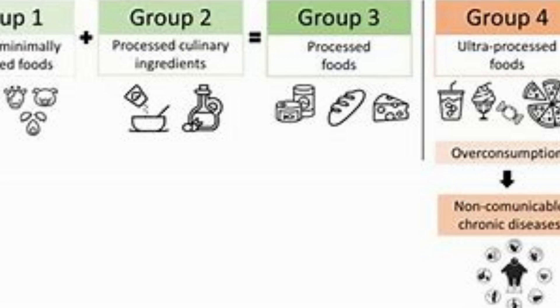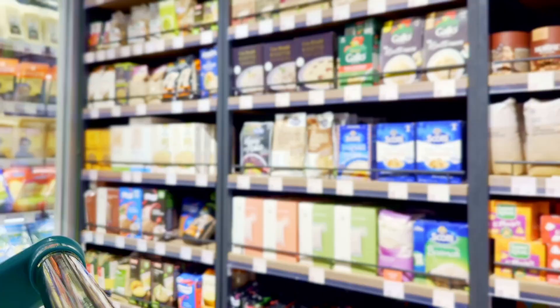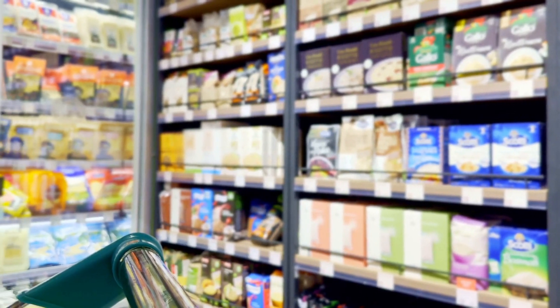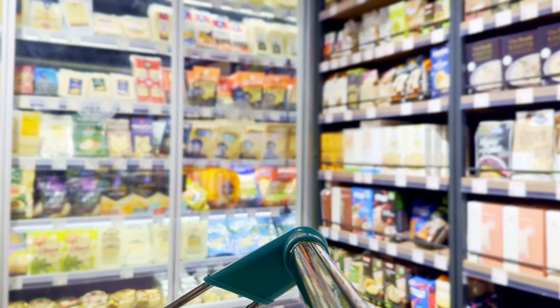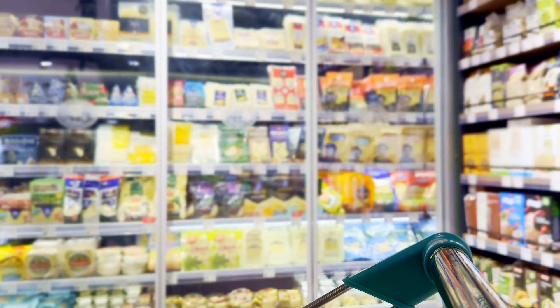Examples of ultra-processed foods include soft drinks, sweet and savory snacks, reconstituted meat products, pre-prepared frozen dishes, and more. These highly palatable and convenient products now make up at least 50 percent of the total dietary energy consumed in high-income countries like Canada, the US, and the UK. In some parts of the country where food deserts exist, it can be as much as 100 percent of the food that's available.